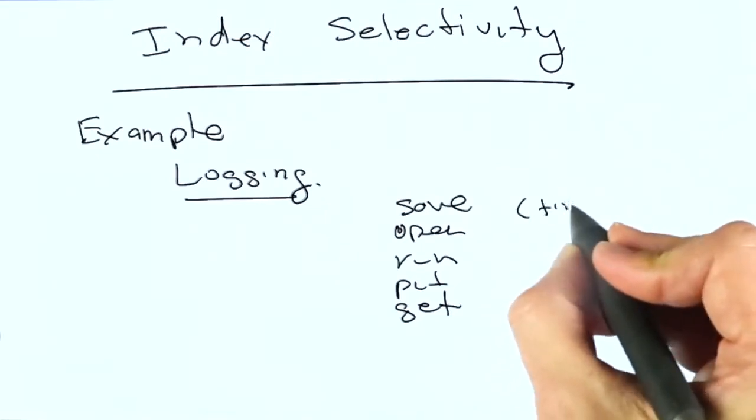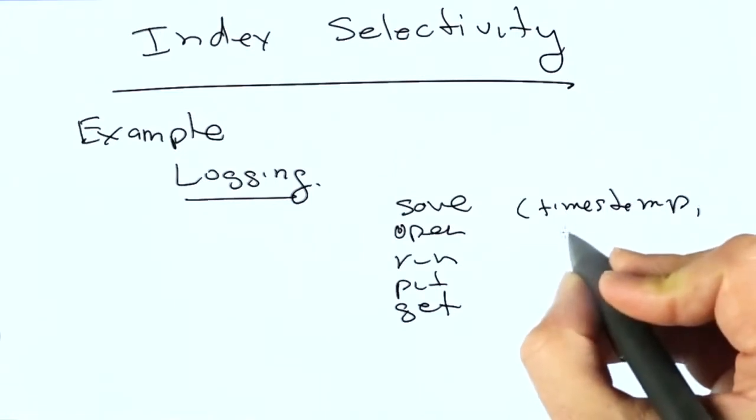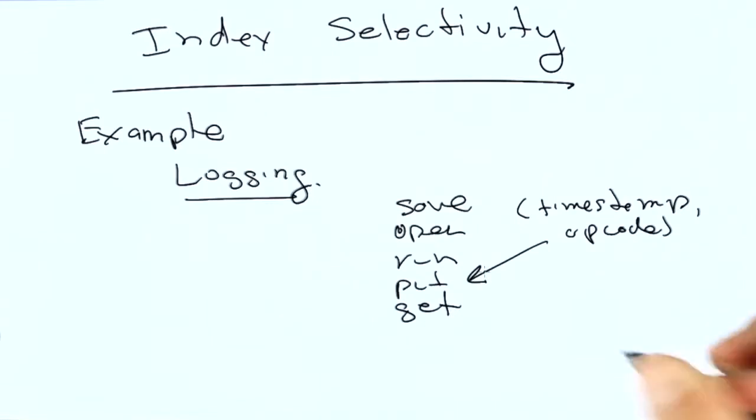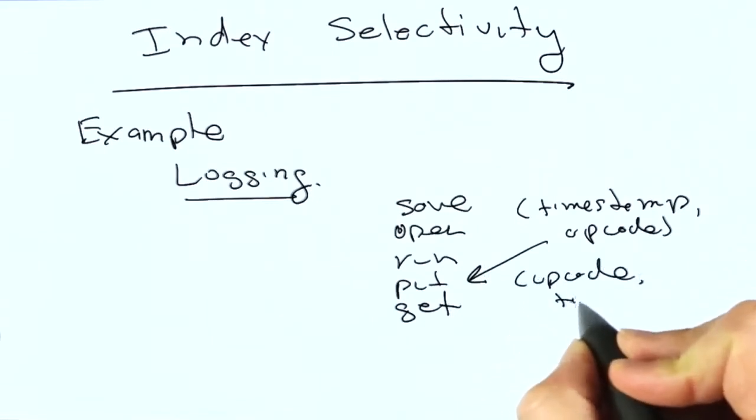So would you rather have an index that was the timestamp, comma, the opcode, where these are the opcodes? Or would it make sense to do the opcode, comma, the timestamp?